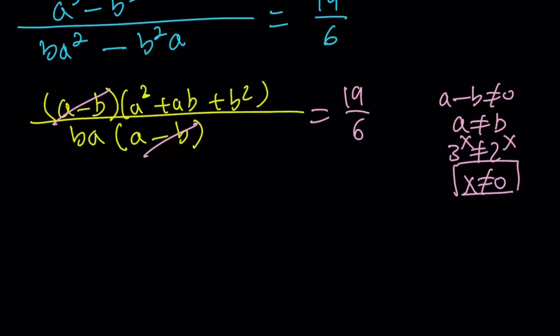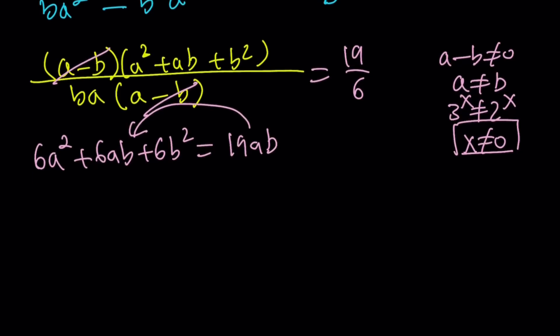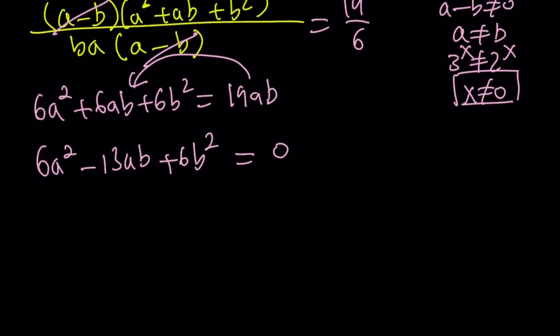Let's go ahead and distribute. We get 6a squared plus 6ab plus 6b squared equals 19ba, which is the same as ab. You can subtract 19ab from 6ab, and that gives you minus 13ab. And guess what? It makes this expression factorable.